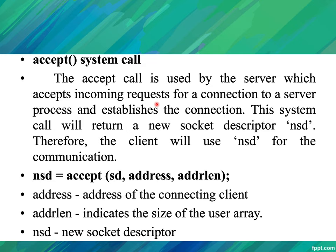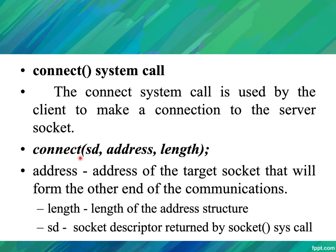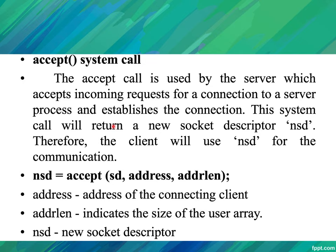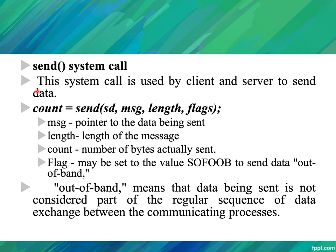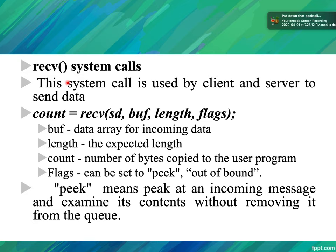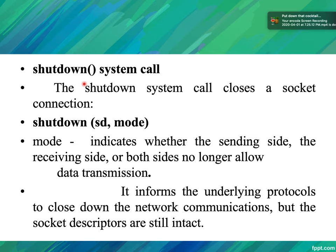Once the connect system call is successfully executed, the server accepts the connection using the accept system call. After the connection is accepted, both server and client are connected and can communicate using the send and receive system calls. The send system call syntax is: count = send(sd, message, length, flags), which is used for sending a message. The receive system call is used to receive any message from the client or server. Both client and server can use send and receive for communication.